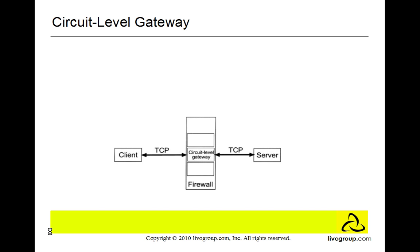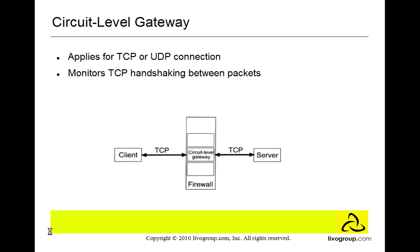The next type is the circuit level gateway. It applies to TCP or UDP connections and monitors TCP handshaking between packets. A circuit level gateway creates a circuit between the client computer and the server, and it hides information about the private network. Circuit level gateway is also considered a second generation firewall.